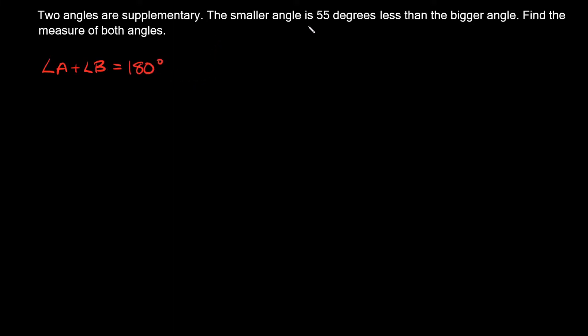Now this is where all the information comes from, but it's kind of confusing. It says the smaller angle is 55 degrees less than the bigger angle. So it doesn't give me the measure of either angle. So angle A, I'm just gonna call it X because I don't know what it is. And then what I have to do now is figure out how this other angle, angle B, relates to X.